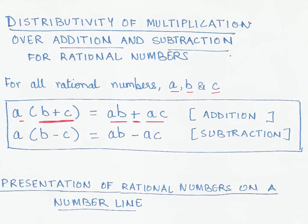So a into b plus c equals ab plus ac. Now if we look at distributivity of multiplication over subtraction, which means a multiplied by the difference of b minus c is the same as ab minus ac. So this is what we call the distributivity of multiplication over subtraction.